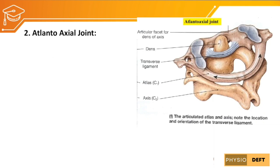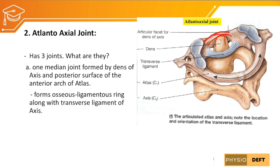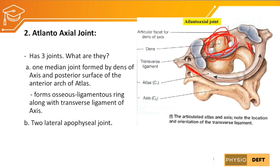The second joint is the atlanto-axial joint, which has three joints. The first is the median joint, formed by the dens of the axis and the posterior surface of the anterior arch of the atlas, creating an osseous-ligamentous ring along with the transverse ligament of the axis. The transverse ligament and the anterior arch together hold the dens in position. It also has two lateral apophysial joints — one on each side — formed between the inferior articulating surface of the atlas and the superior articulating surface of the axis.